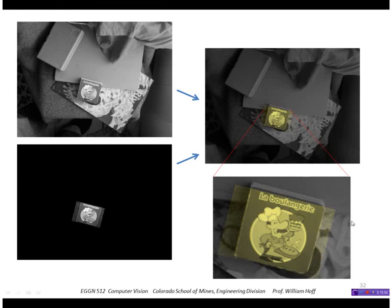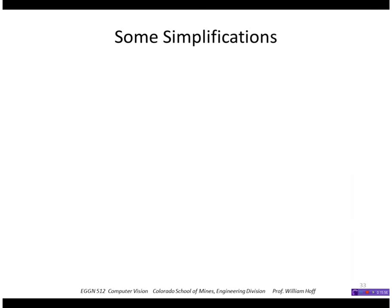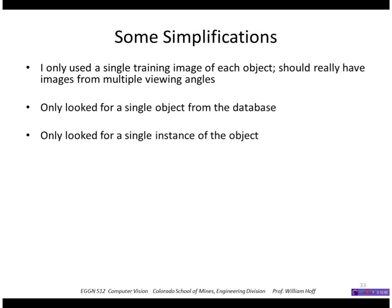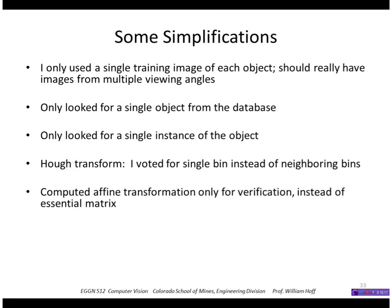Some simplifications I used in this demonstration: I only used a single training image of each object, I only looked for a single instance of the object, I didn't vote for neighboring bins, just a single bin, and I computed an affine transformation only instead of an essential matrix. So I also should note that Lowe uses a hash table to implement the Hough transform, where I just use the full four-dimensional Hough array.